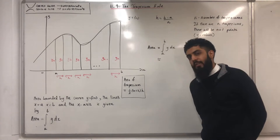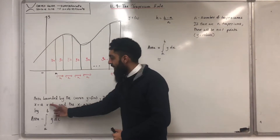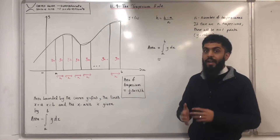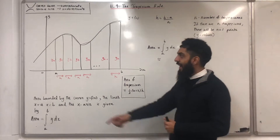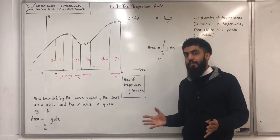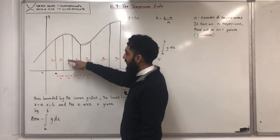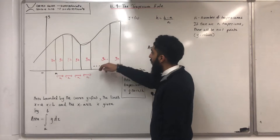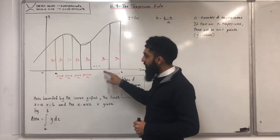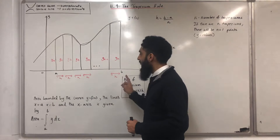I want to approximate this area — in other words, approximate this particular integral. I can divide the area between the line x equals a and the line x equals b into n trapezoids. Here is my first trapezoid, here is the second one, third one, fourth one, and the very last one is the nth trapezoid. Each of these trapezoids has a constant height h as labelled.